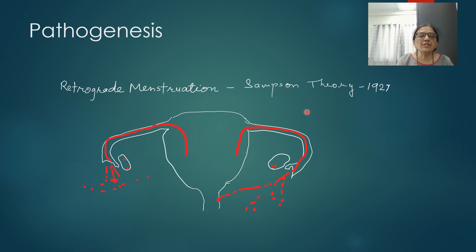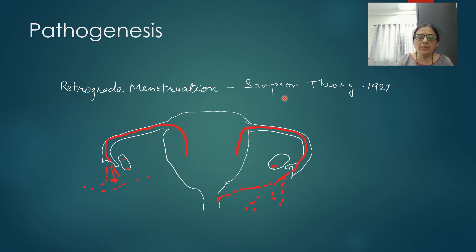Retrograde menstruation is the first theory explaining why endometriosis takes place. It is called Sampson's theory, proposed by Sampson in 1927. Sampson is called the father of endometriosis as he also coined the name of the disease. By this theory, endometrial cells are carried as retrograde menstruation through the fallopian tube and get implanted in various pelvic tissues — pelvic peritoneum, posterior surface of uterus, uterosacral ligaments — which are the commonest sites of endometriosis.